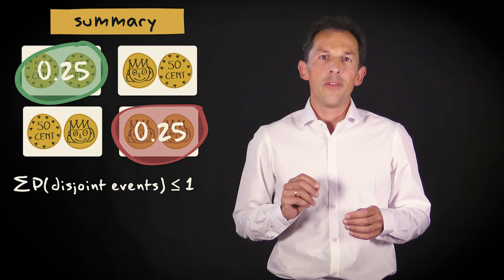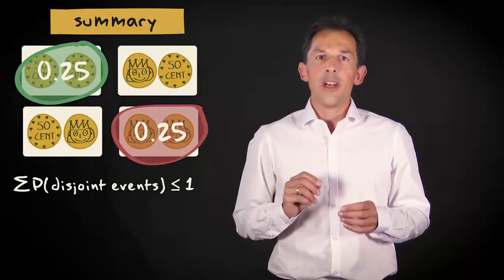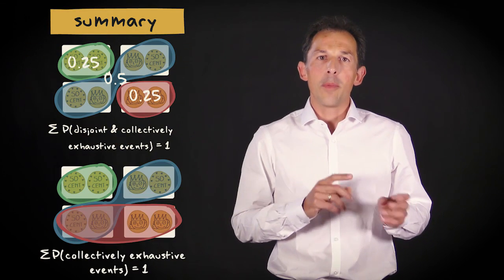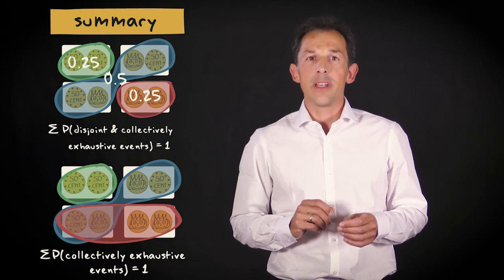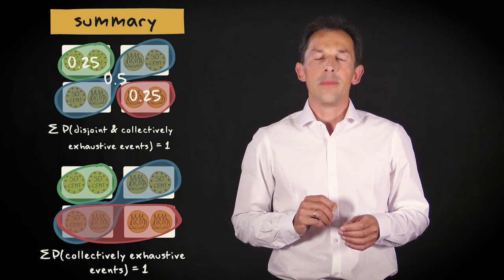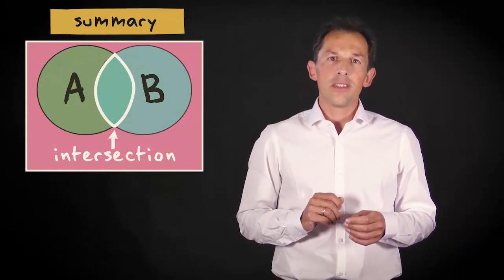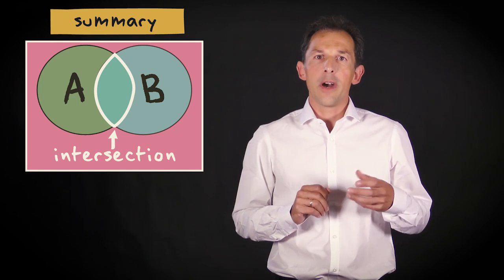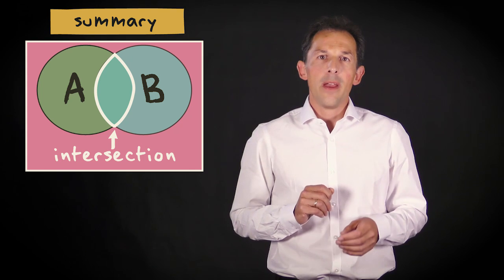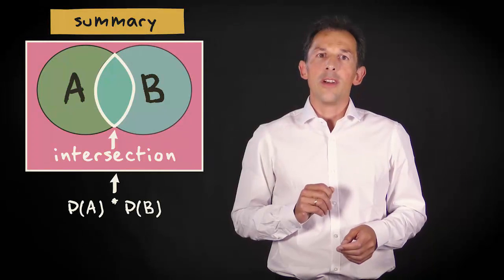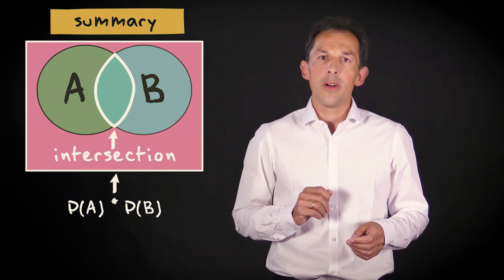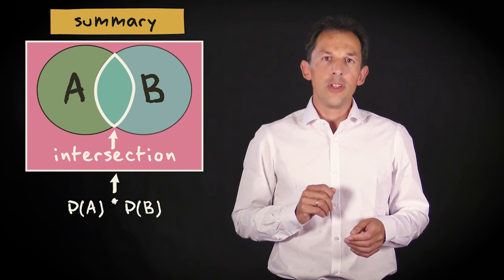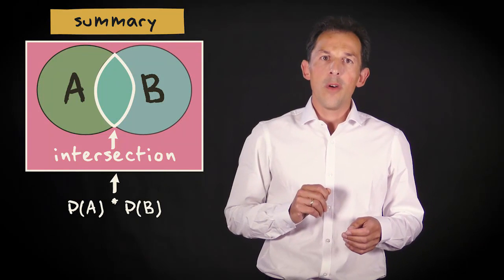The sum of the probabilities associated with disjoint events will be smaller than or equal to one. The sum of the probabilities associated with collectively exhaustive events is one. The intersection of events A and B is a subset of both events. It contains outcomes that are part of A as well as B. The probability of the intersection of independent events A and B is calculated by multiplying the probability of event A with that of B. For disjoint events, this probability is zero by definition.